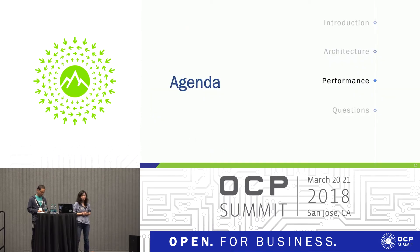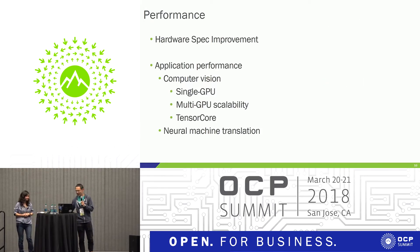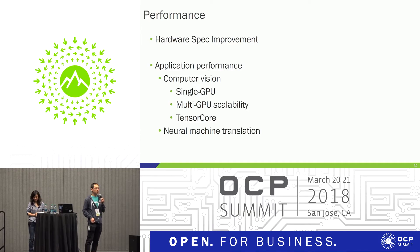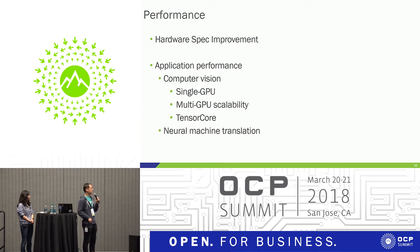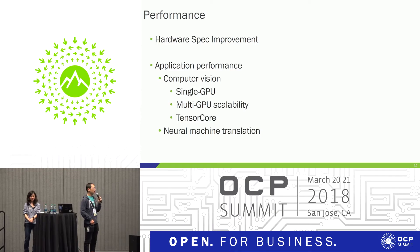Now handing over to Xiaodong to talk about performance. We will look at performance in two aspects: first the hardware spec improvements, and then how those translate into actual application performance. We will examine two popular machine learning workloads — computer vision and neural machine translation. For computer vision, we'll look at single GPU training performance, how training scales across multiple GPUs, and finally how much extra performance boost we get by enabling the new Tensor Core technology.